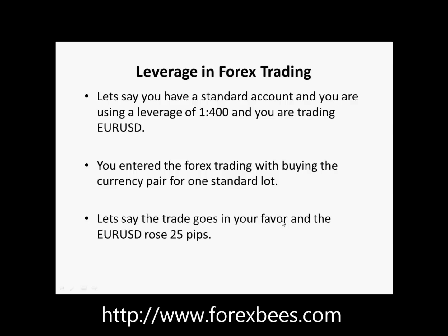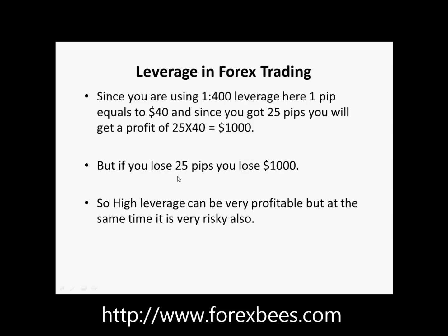Let's say the trade goes in your favor and the EUR/USD currency pair that you bought rose 25 pips. Since you are using 1:400 leverage, 1 pip equals $40. Since you got 25 pips, you get a profit of 25 × $40, which is $1,000. But if you lose 25 pips, you lose $1,000.